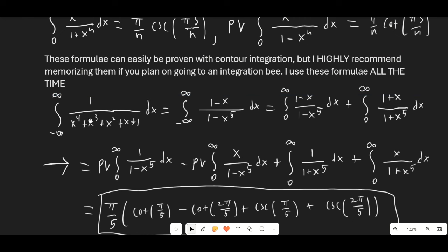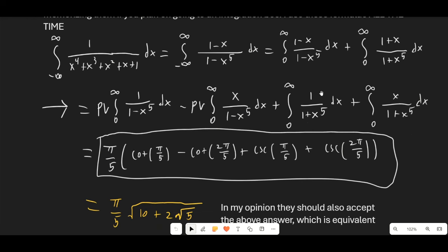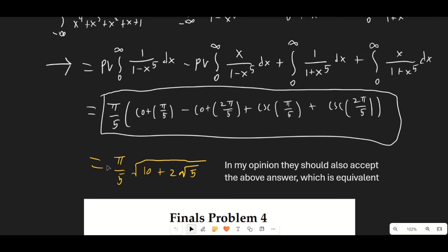To apply these formulas we multiply by (1-x) on the top and bottom, then split the integral from negative infinity to 0 and 0 to infinity, flipping the first part. This gives us two integrals. We split the first into Cauchy principal values and the second splits normally. Applying the formulas gives π/5 times (cot(π/5) - cot(2π/5) + csc(π/5) + csc(2π/5)). This is actually equivalent to the answer written in the bee — you can verify using the sine and cosine values of π/5, though they're absolutely equivalent.